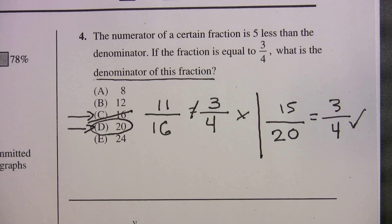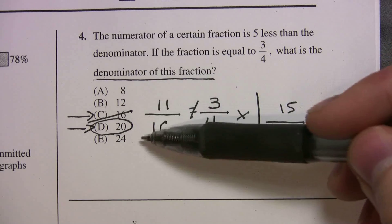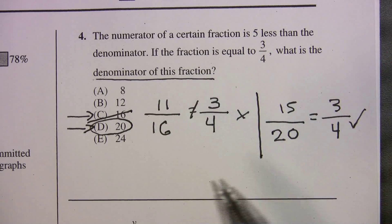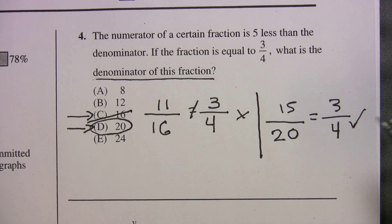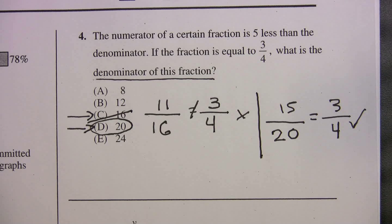So working backwards works really well when you have nice, easy answer choices, not variables. And keep in mind that you're just going to pick an answer and work it back into the problem. So this works for the easy ones, and this works for the hard ones.